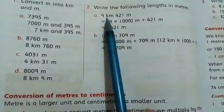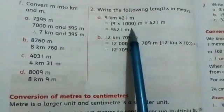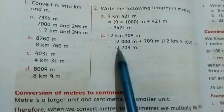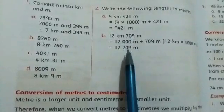We will multiply by 1000. 9 kilometers times 1000, and here we will add plus 421 meters. What will happen? 9421 meters. Similarly here, what will happen? 12,709 meters.